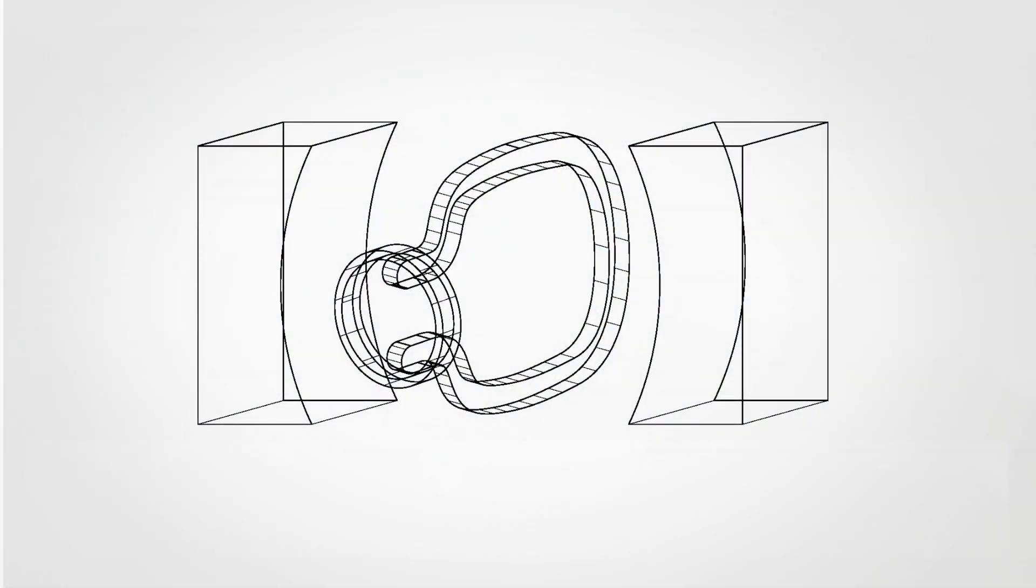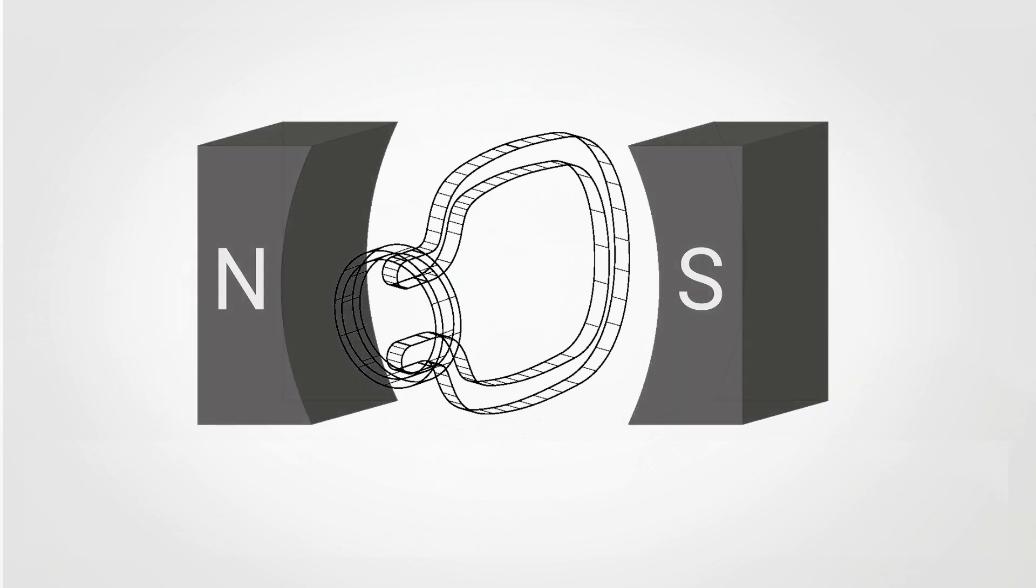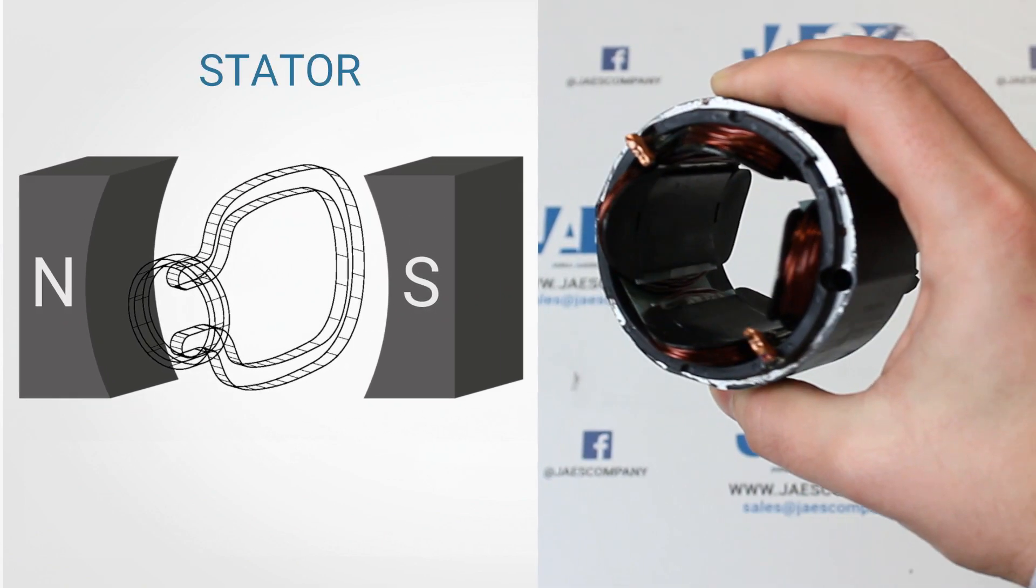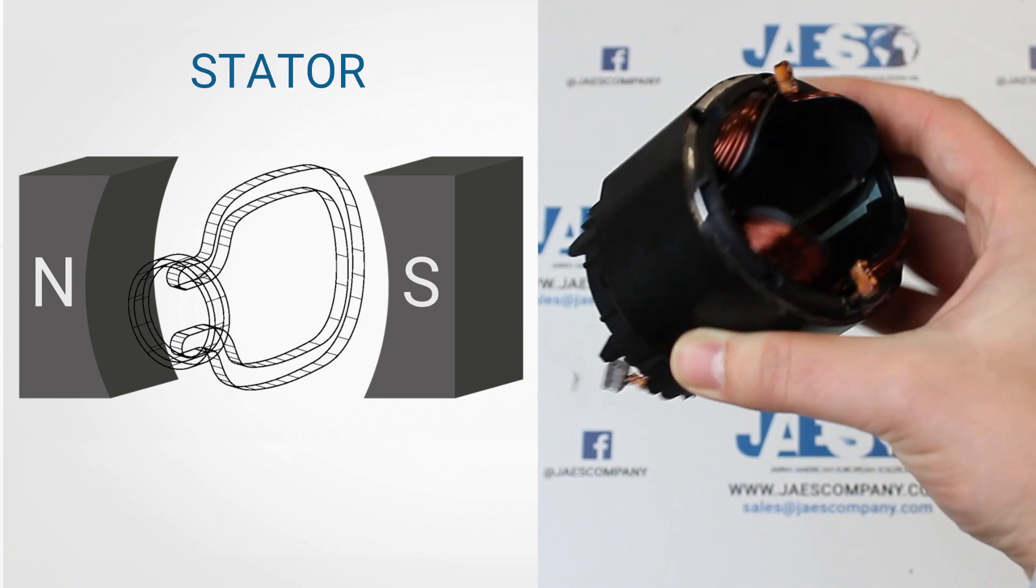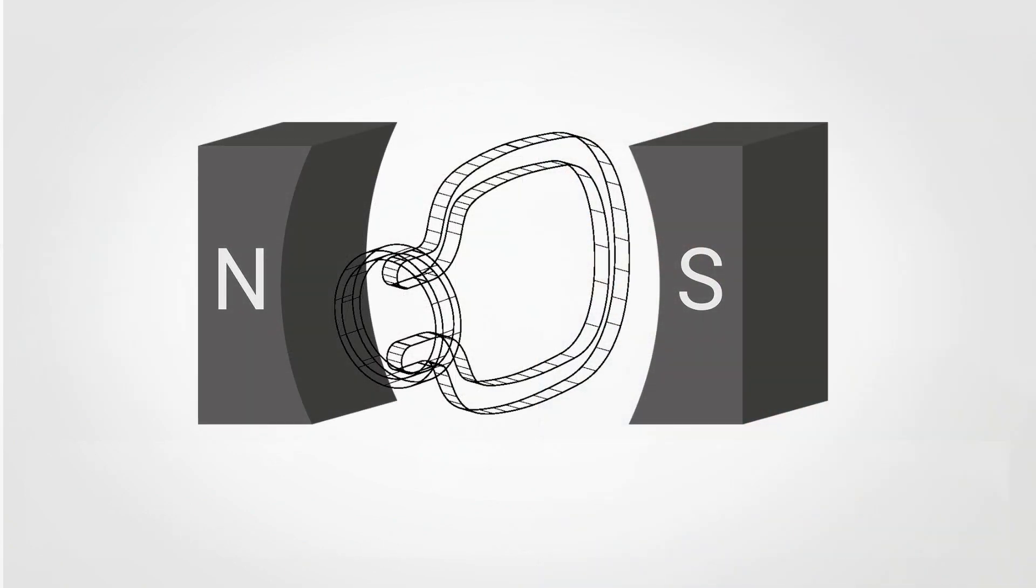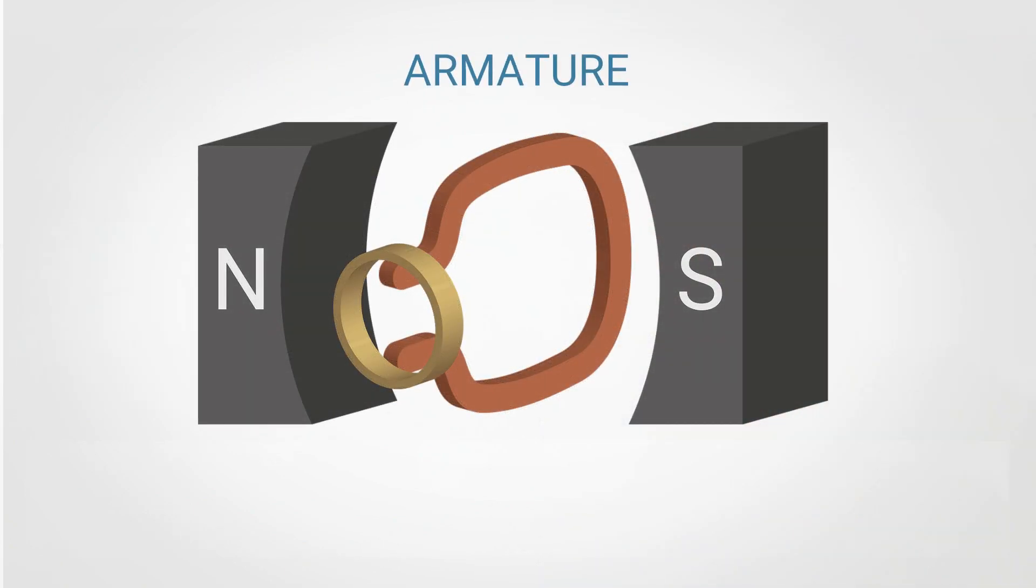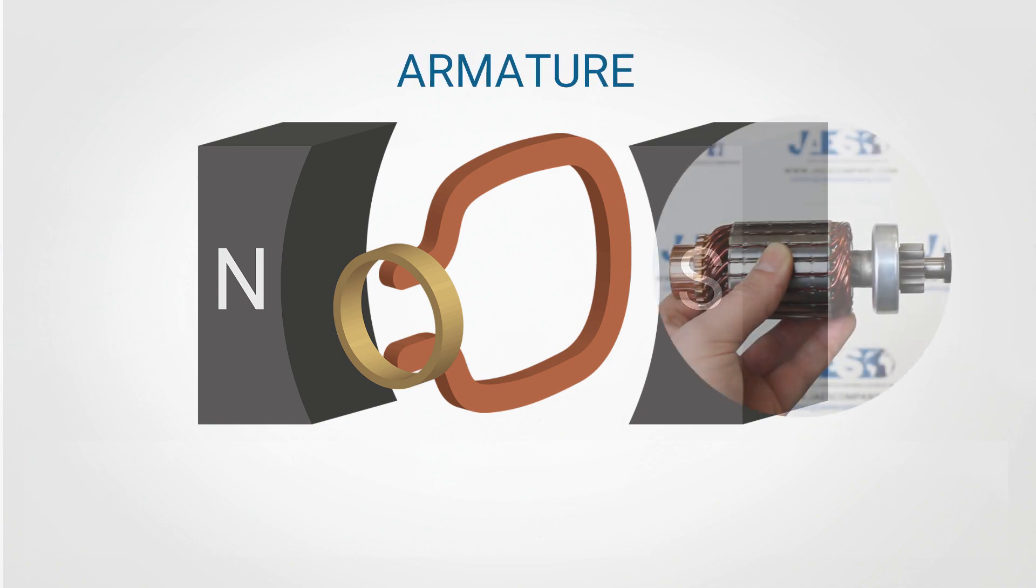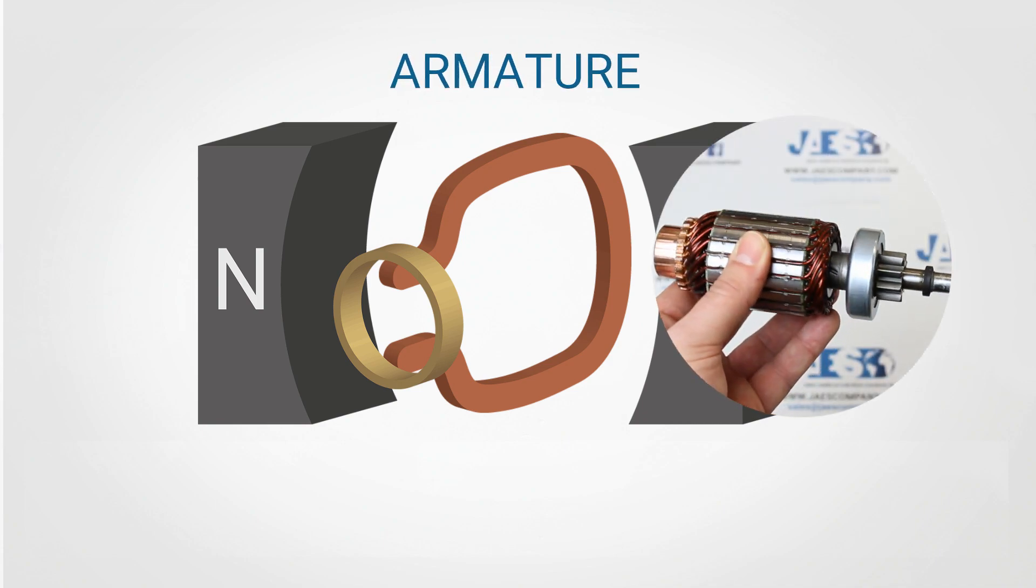Let us take the example of the most simple version of a DC motor. This is the stator, which is responsible for the creation of a magnetic field. This is the armature with a simple copper coil and represents the rotating part of this engine.